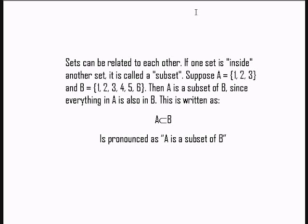Sets can be related to each other. If one set is inside another set, it is called a subset. Suppose A equals set {1, 2, 3} and B equals set {1, 2, 3, 4, 5, 6}. Then A is a subset of B since everything in A is also in B. This is written as A is a subset of B.